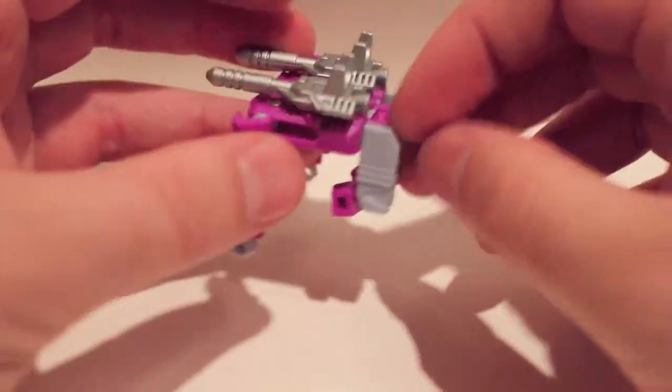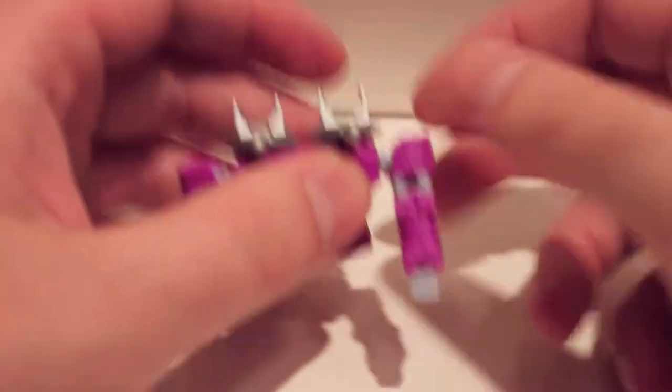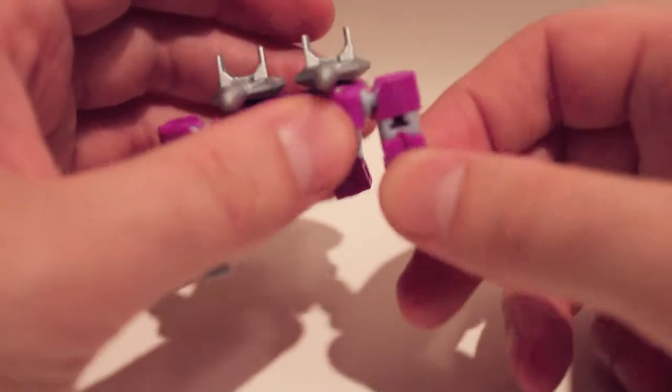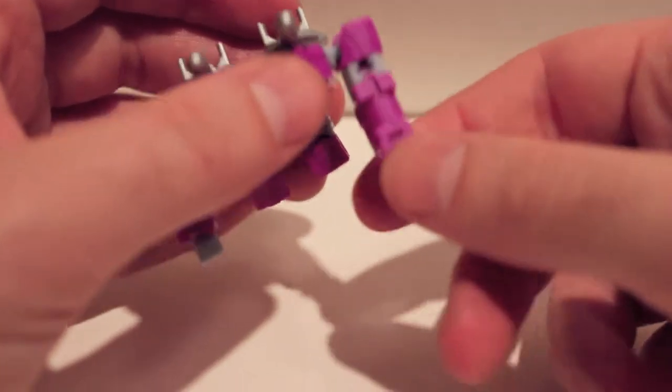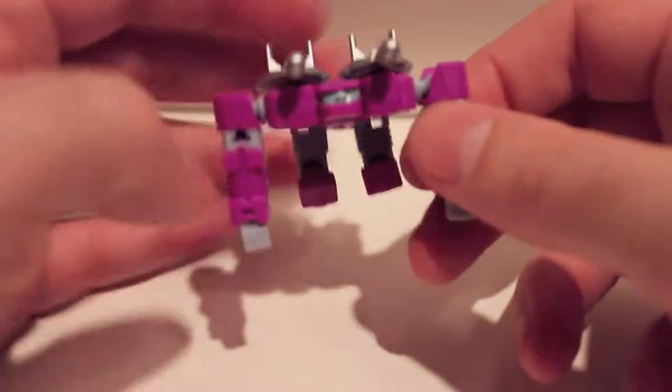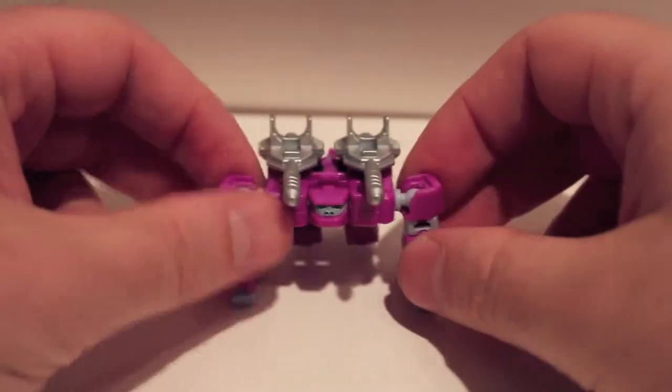It's very similar to the G1 figure, just with ball joints. So for articulation, you can rotate them in and out here. Ball joints on these feet, ball joints on these shoulders. Nothing here at the elbow, but his wrist is on a ball joint and his hands on a ball joint, so you've got rotation there. And his head can swivel somewhat. Not a bad little guy.